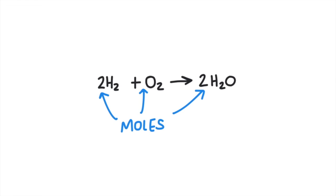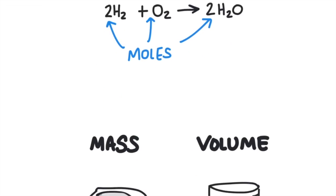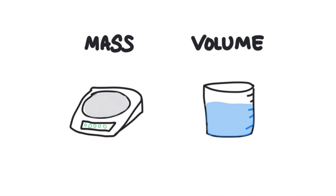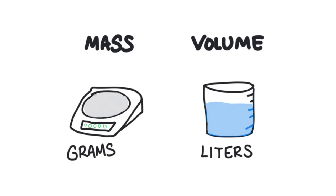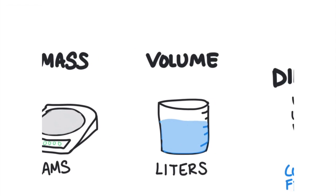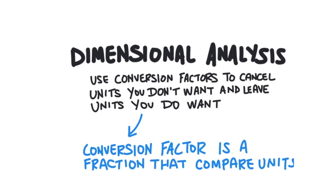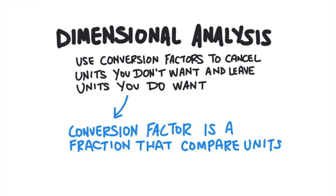We don't really measure in units of moles in the laboratory. We usually measure the amounts of stuff by measuring mass or volume — the units called grams or liters. So we need to be able to convert between moles, grams, and liters. First, let's learn how to convert between moles and the number of things.